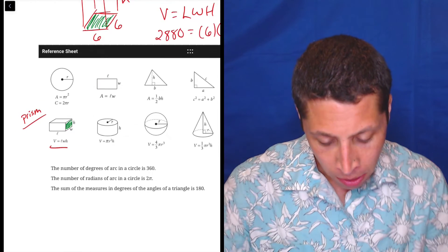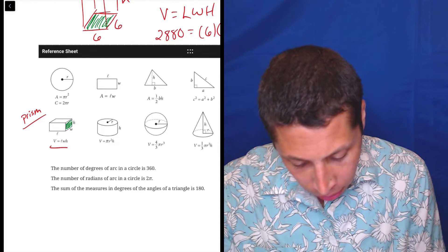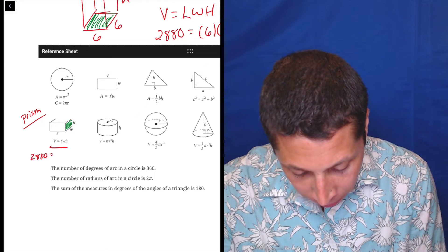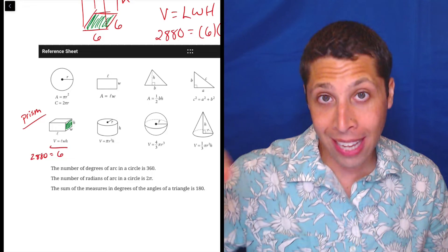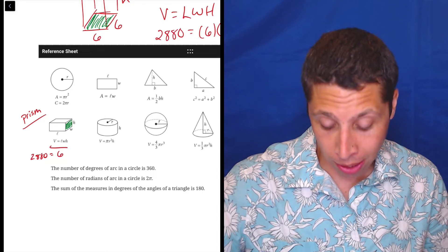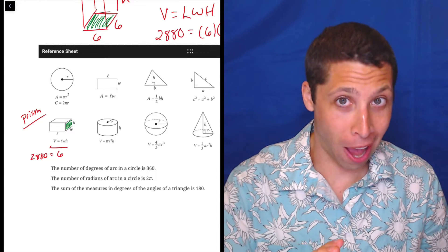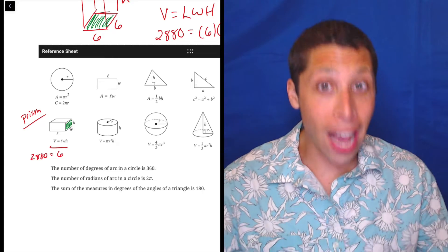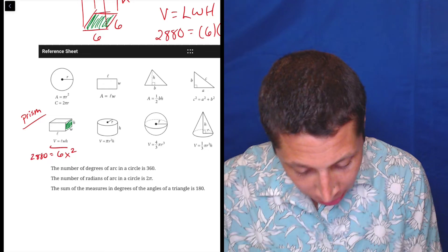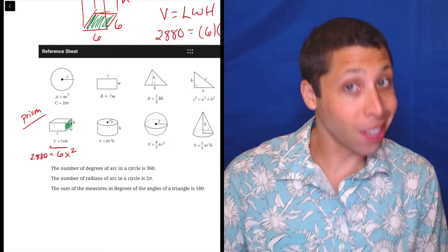But if we think about it that way, we would say, okay, then the 2880 is still our volume. Our length is 6, but that means then that the width and the height are the same. So those would be the square side, right? The width and the height. You can see it based on this little drawing here. So let's just call it x squared.